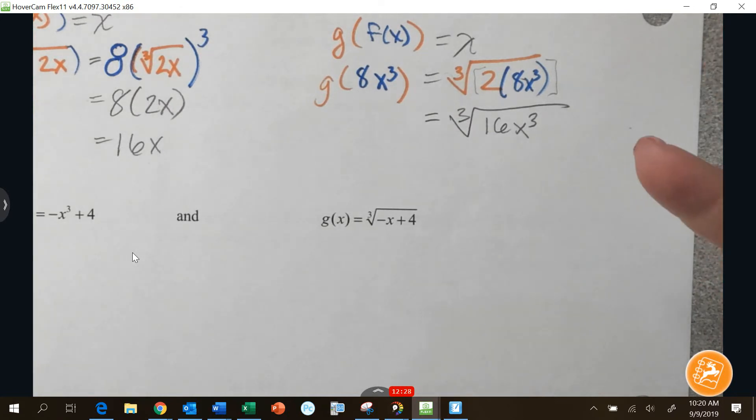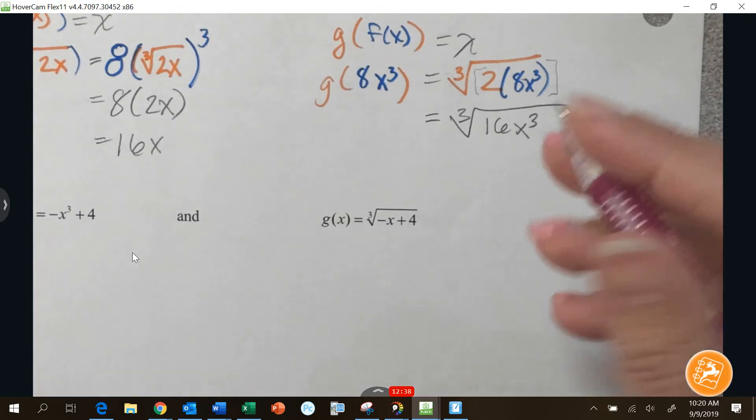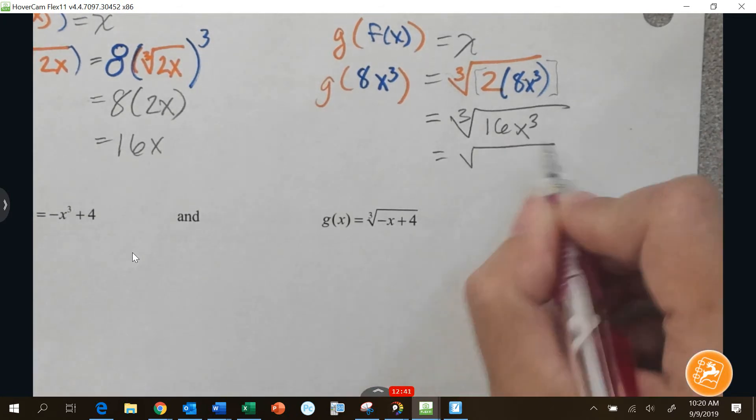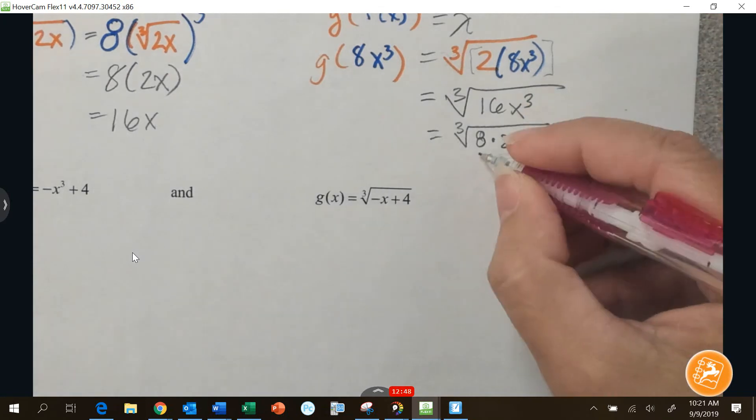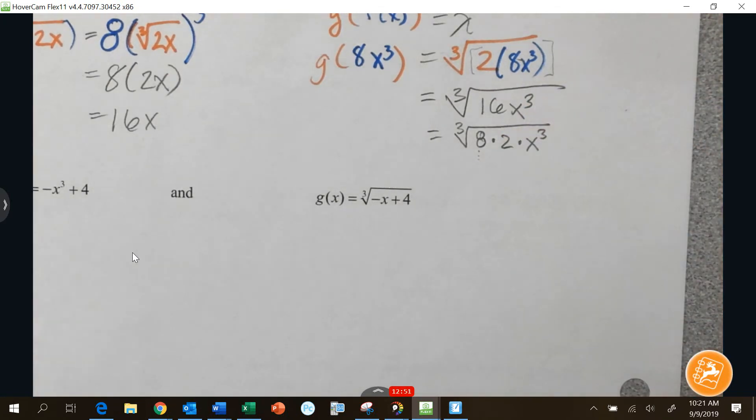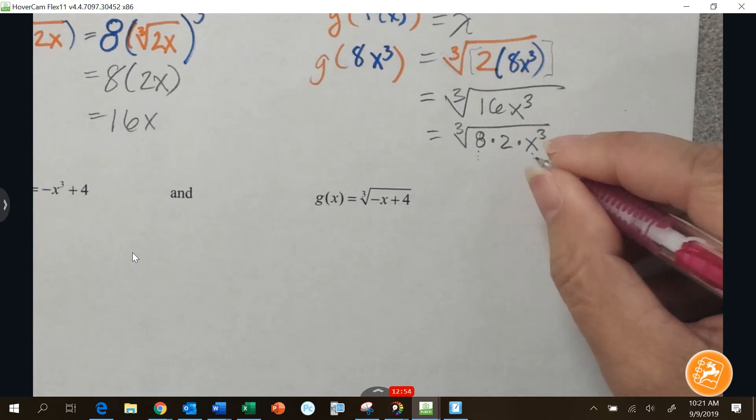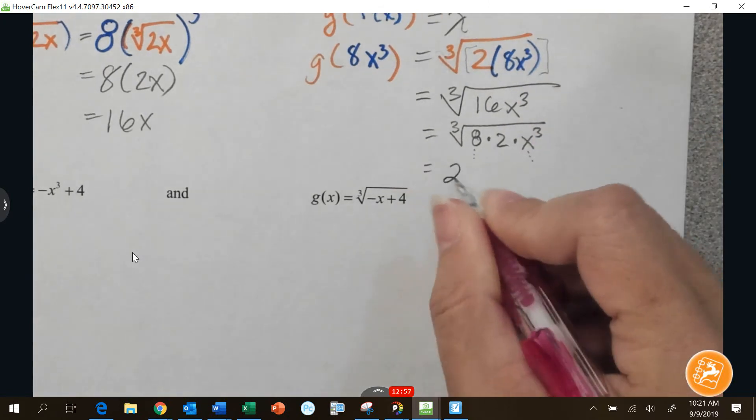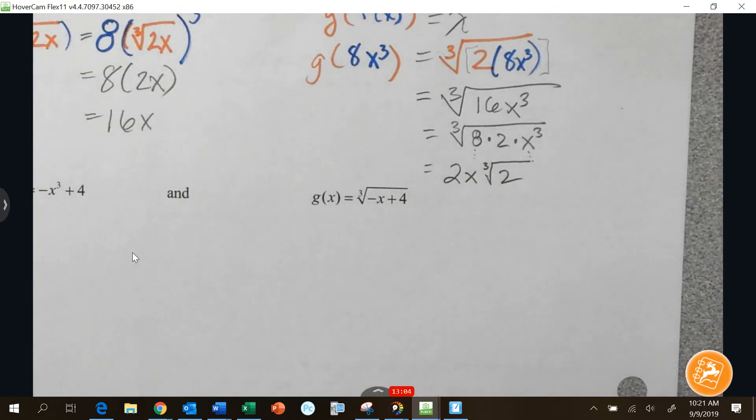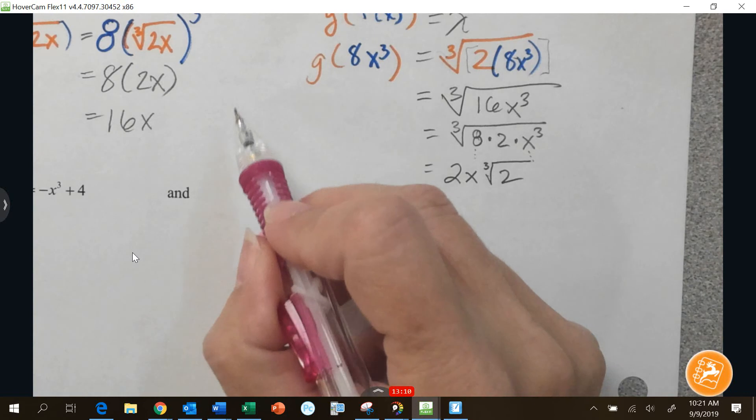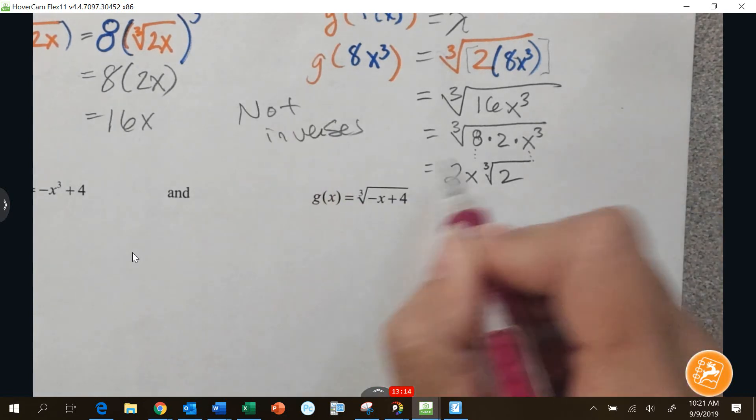Now we need to cube root. And the cube root, you have to look for perfect cubes. Does anybody see any perfect cubes under there? I see one almost. 8 times 2 times x cubed. Now I see an 8. So 8 is a perfect cube. Any other perfect cubes in there? X cubed is a perfect cube. So those come out and become 2x. But there is still left over that 2 that didn't come out. So now, are they inverses? No, not inverses. Because they do not equal x.